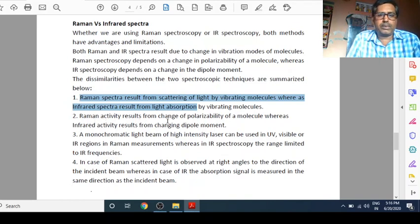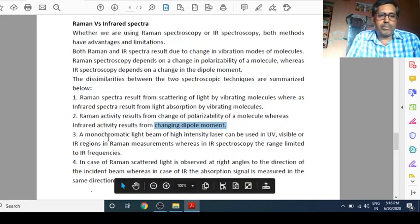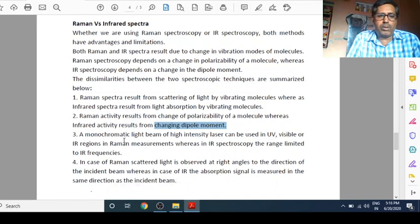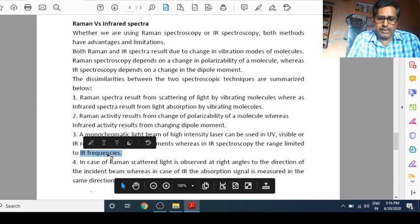Second comparison, Raman activity results from change of polarizability of a molecule, whereas infrared activity results from changing dipole moment. So here, dipole moment plays an important role. Third, monochromatic light beam of high intensity laser can be used in UV, visible, or infrared regions in Raman measurement, whereas in infrared spectroscopy, the range limited to IR frequencies. There is a limitation here.